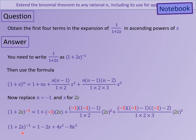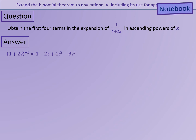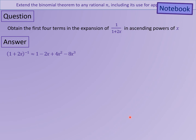When I simplify out, I have the formula just here. I've got my answer as 1 plus 2x to the minus 1 equals 1 minus 2x plus 4x squared minus 8x cubed.